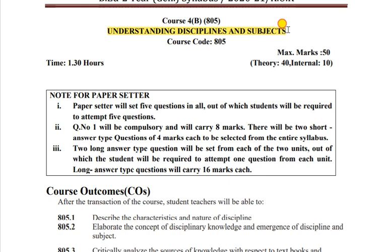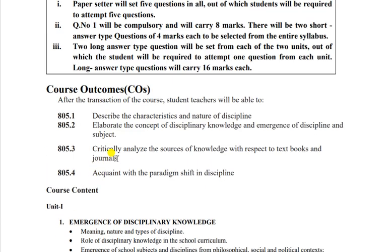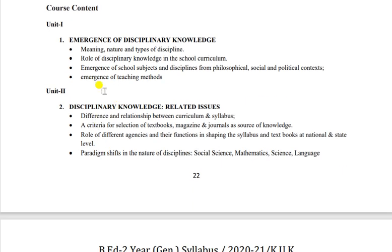Next subject hai Understanding Disciplines and Subjects - course code 805. Unit 1 hai emergence of disciplinary knowledge - meaning, nature and types of disciplines, role of disciplinary knowledge in the school curriculum, emergence of school subjects and disciplines from philosophical, social and political context, emergence of teaching methods.